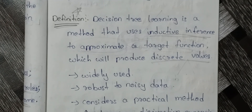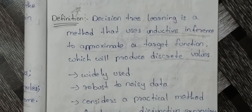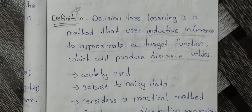So the decision tree is a method that uses inductive inference to approximate a target function, which will produce discrete values. This is the basic and important definition.